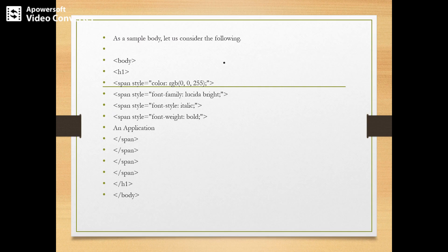Let us consider this following sample body. There are types of headers: h1, h2, h3, h4, h5, and so on. Next, span with a style attribute — span style equal to color RGB. The RGB stands for red, green, blue, and whatever values are taken, that color will be applied. In this line, we are going to get blue color.